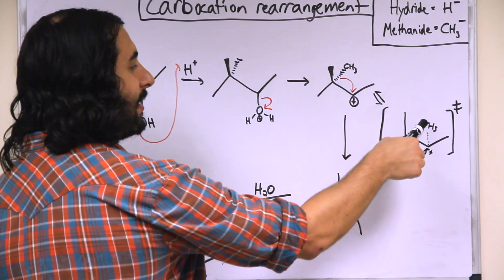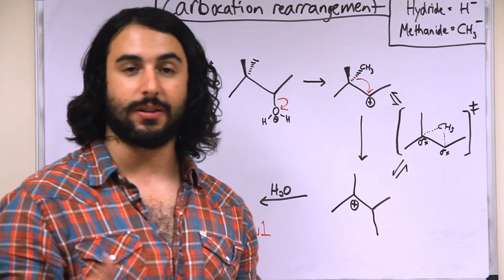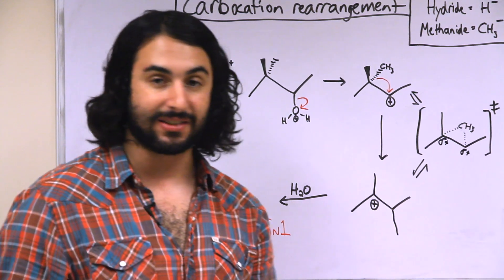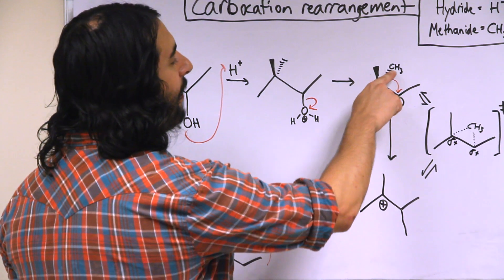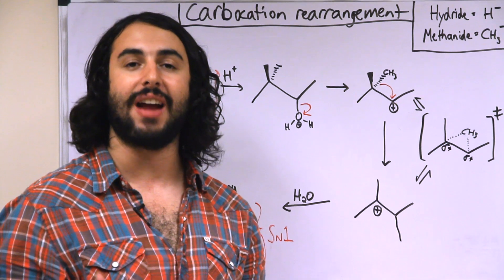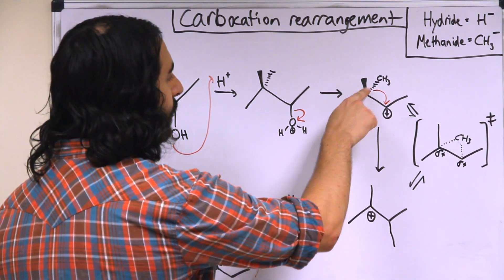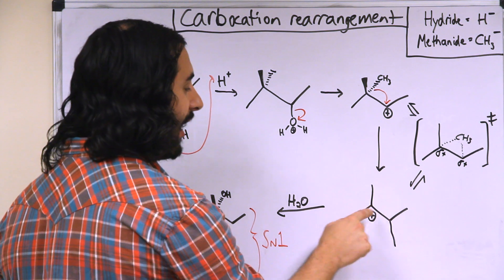So here's our CH3, and then if we look at the transition state, we're seeing the same thing happening. Whereas now, it's simply that that carbon atom is weakly bound to each of these carbons in the transition state. So an entire methyl group, or we should say a methanide group, is shifting from this carbon to satisfy that secondary carbocation.